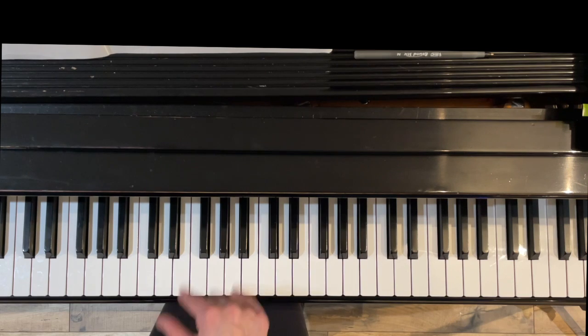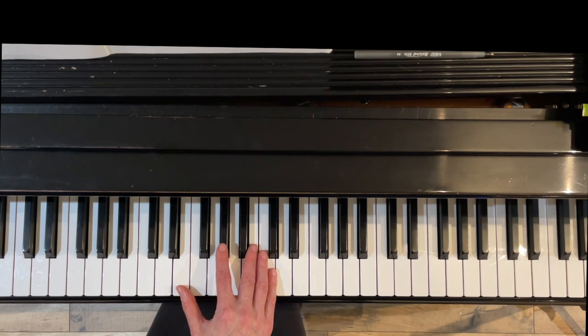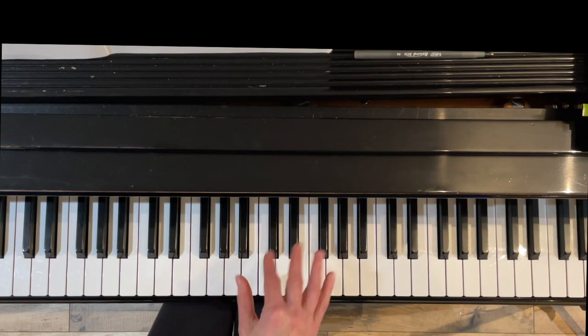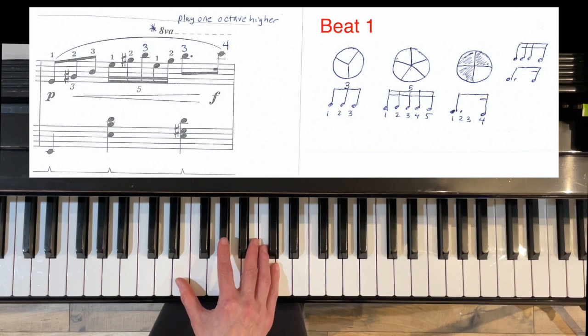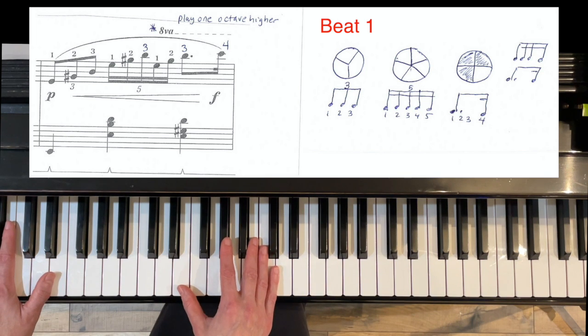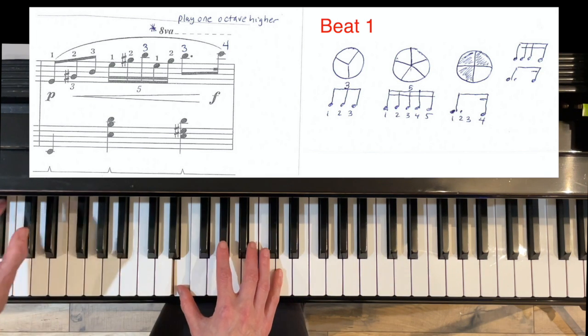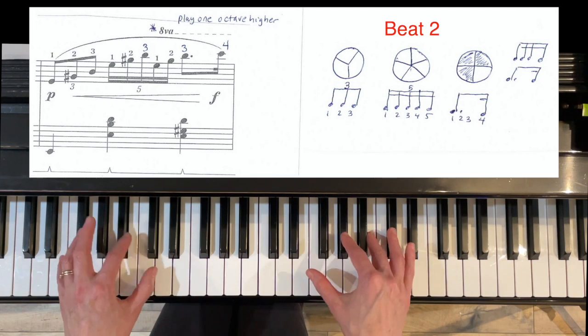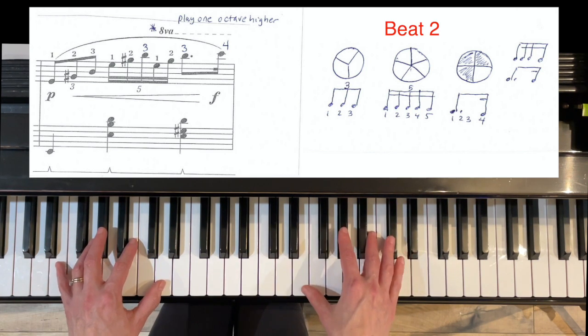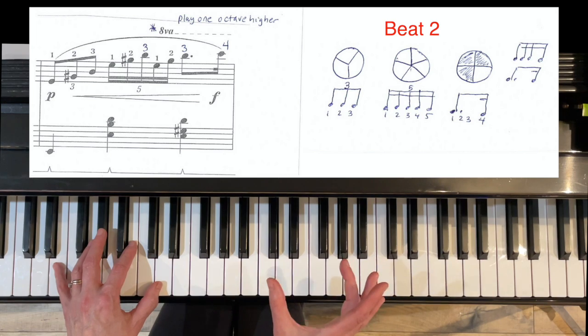Now the final thing I want to address is the rhythm of this measure. It's really fun and you can get it if you repeat this a lot of times and get it really feeling flexible with your thumb crossing under. So the first beat is what I call the fat beat. It's split into three equal parts. Then we've got five notes, so these are going to be a little bit faster because they're fitting in the same amount of time as beat one.